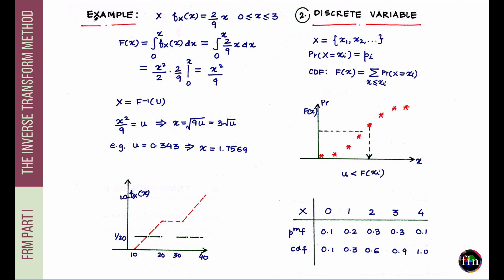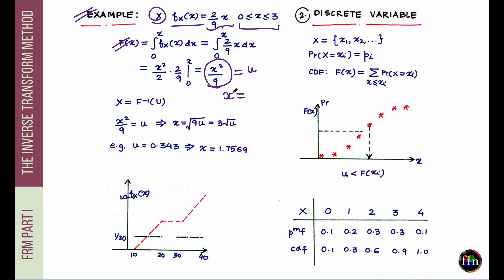Now let's do a quick example. I am given a continuous random variable whose PDF is f_X(x) = (2/9)x, with x in [0, 3]. Converting the PDF to a CDF by integrating from 0 to x gives the CDF as x²/9. Then inverting by setting x²/9 = u and solving for x: x² = 9u, so x = ±3√u. Since x must be non-negative (between 0 and 3), the inverse CDF is x = 3√u.